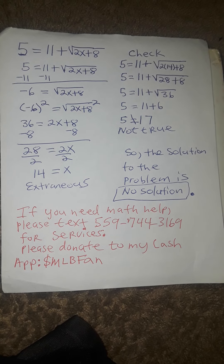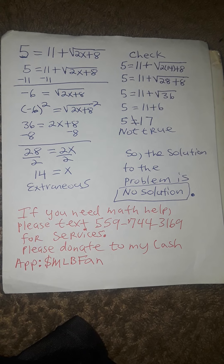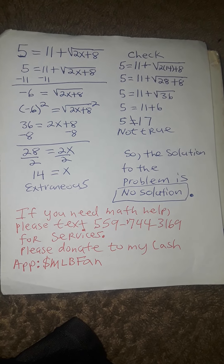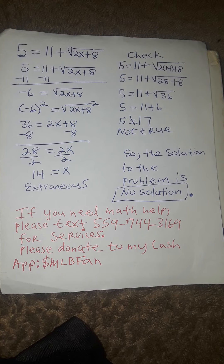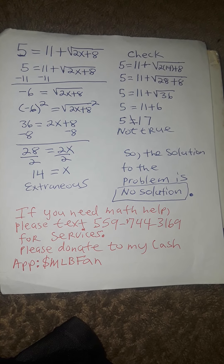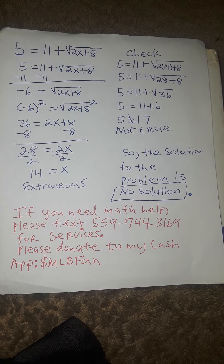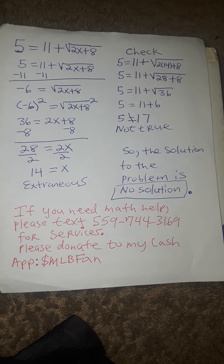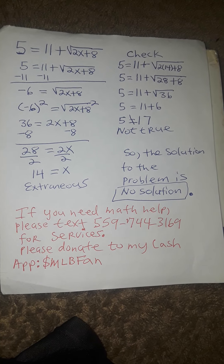First we must subtract 11 from both sides to get the radical by itself. This will cause the next step to be negative 6 equals square root of 2x plus 8.